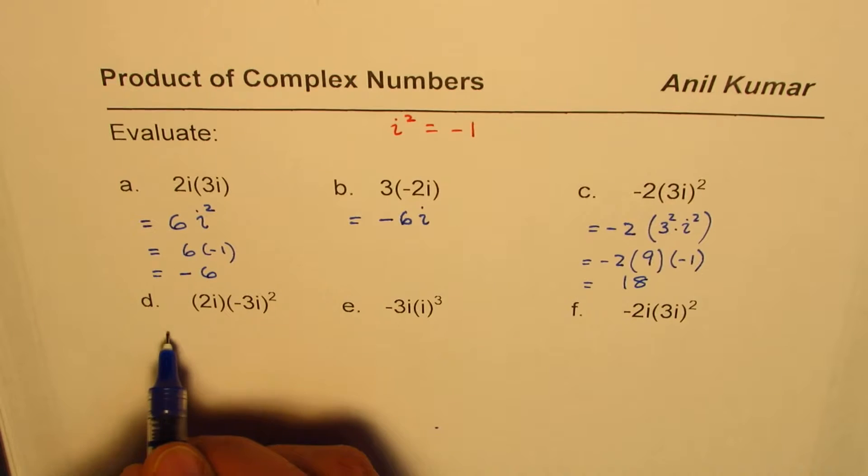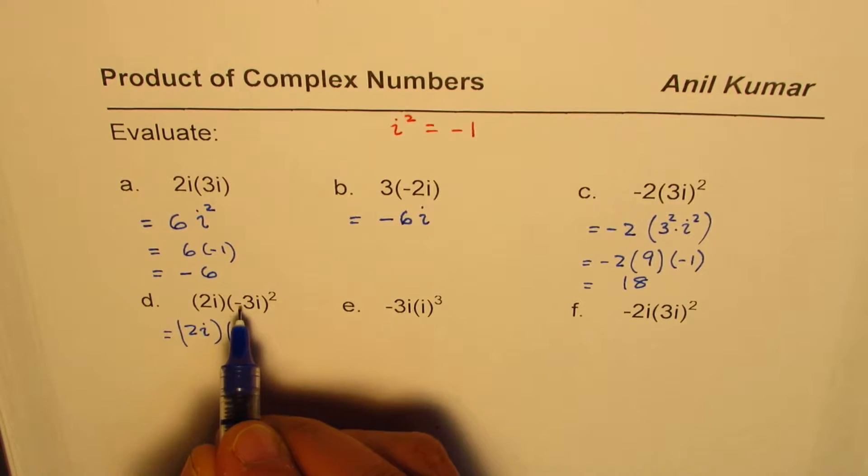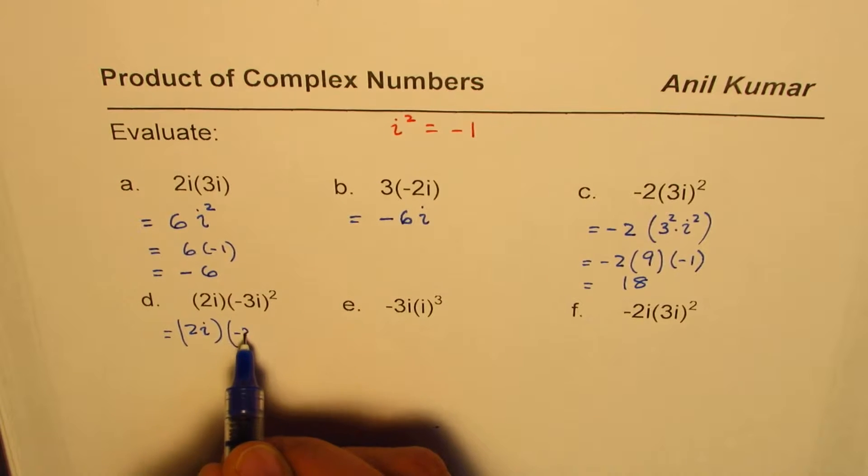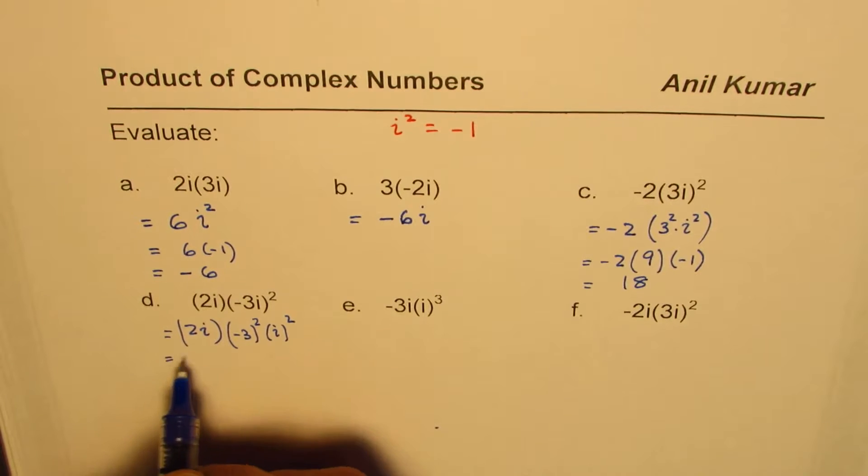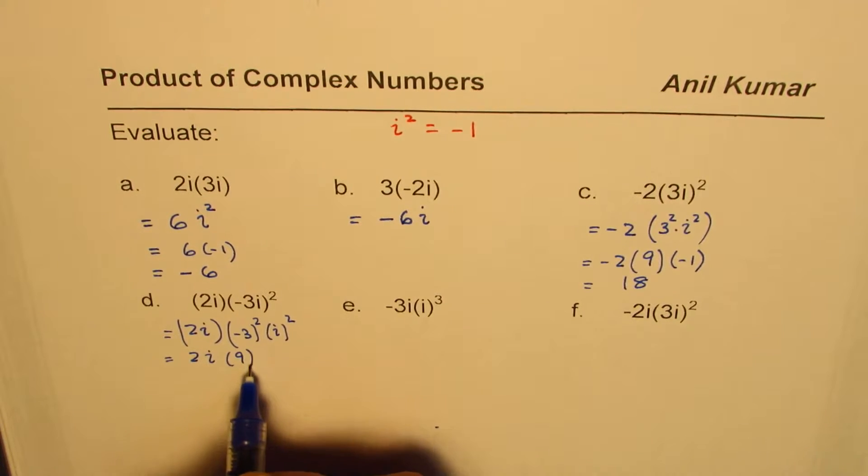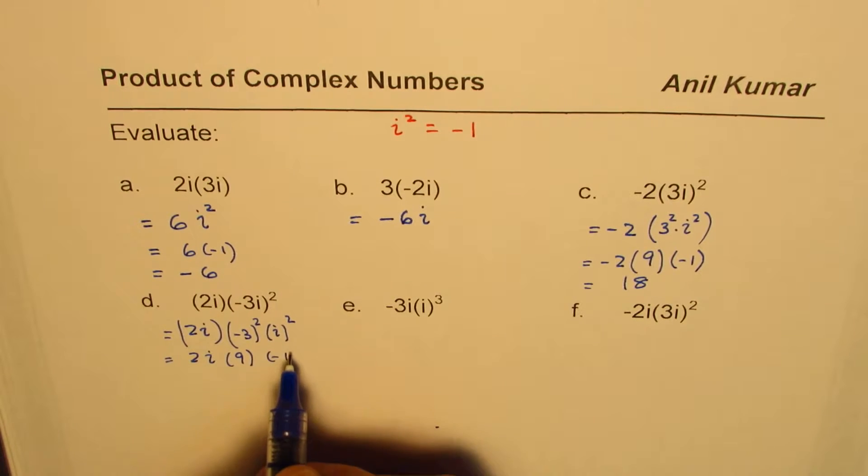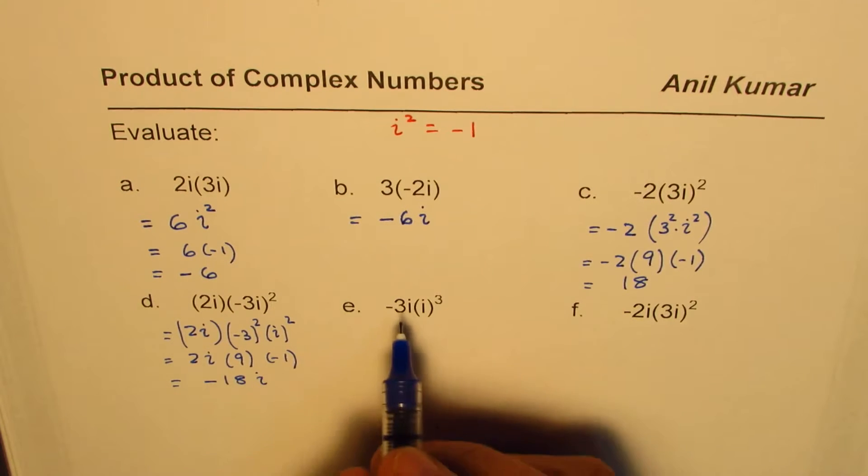Next one: 2i times (-3i)². Let me write this as 2i times (-3)² times i². So 2 times i, (-3)² is 9, and i² is -1. So in this case, you get -18i. So they are different from the previous example.